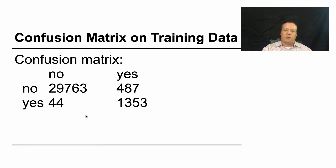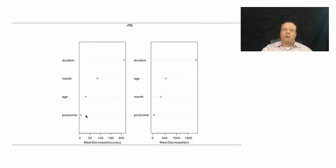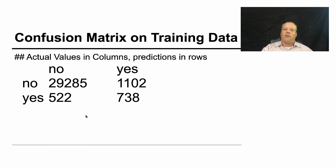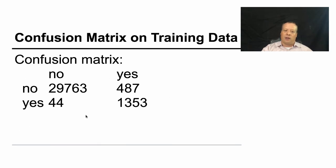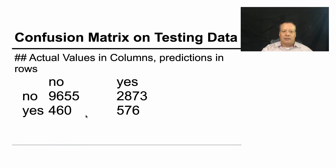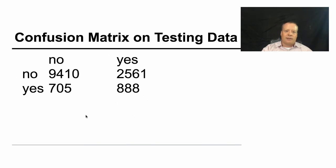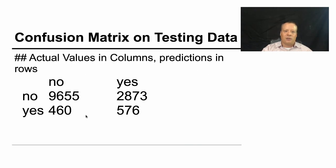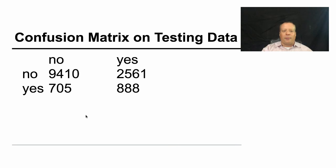You can then look at the confusion matrix for the random forest. And it's pretty good. It's better than it was on the training data for the decision tree that we saw before. And we can look at the testing data. And you know, maybe that's not great. But it's at least around, maybe not 2561. So maybe about the same as the decision tree. So it's not doing great. But it's, you know, we're still getting a decent classifier out of it.